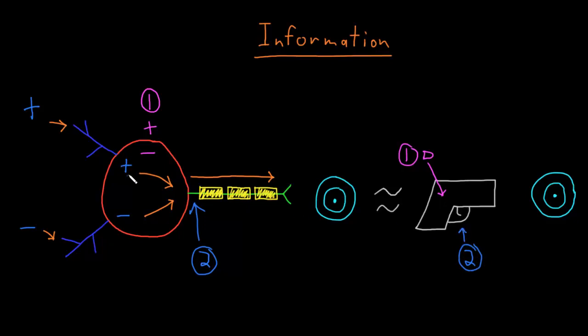I think of the graded potentials as being like the finger on the gun that may be squeezing a little harder or relaxing, but once the trigger of the gun is pulled back past a certain threshold distance, a bullet will be fired down the barrel of the gun, just like if the membrane potential of the trigger zone crosses a threshold value, information will be fired down the axon.